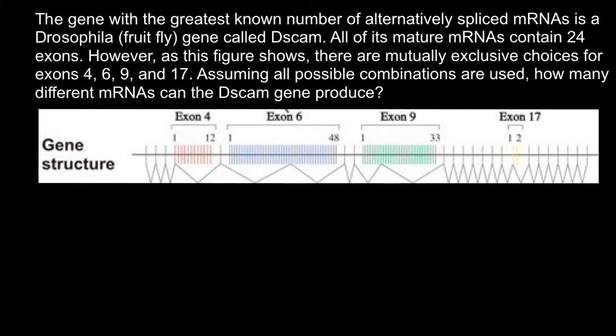Hello and welcome to Nikolai's genetics lessons. This video is going to be a second part in which I am discussing the role and function of the DSCAM gene. I highly recommend you to watch my first video. Once again, here is the problem: the gene with the greatest known number of alternatively spliced mRNAs is a Drosophila fruit fly gene called DSCAM, and all of its mature messenger RNAs contain 24 exons. However, as this figure shows, there are mutually exclusive choices for exons 4, 6, 9, and 17. Assuming all possible combinations are used, how many different messenger RNAs can this gene DSCAM produce?